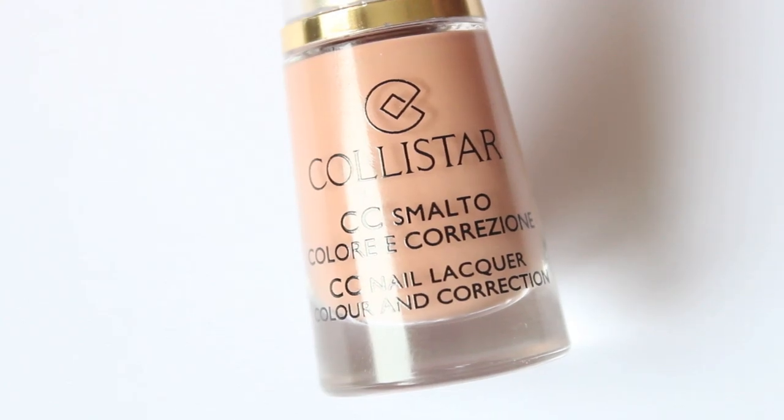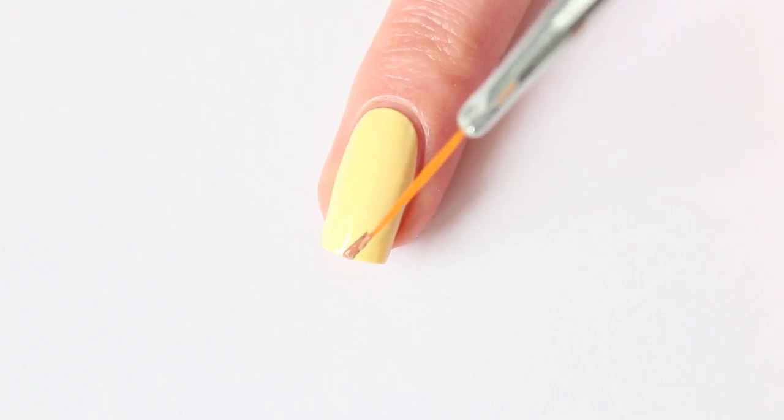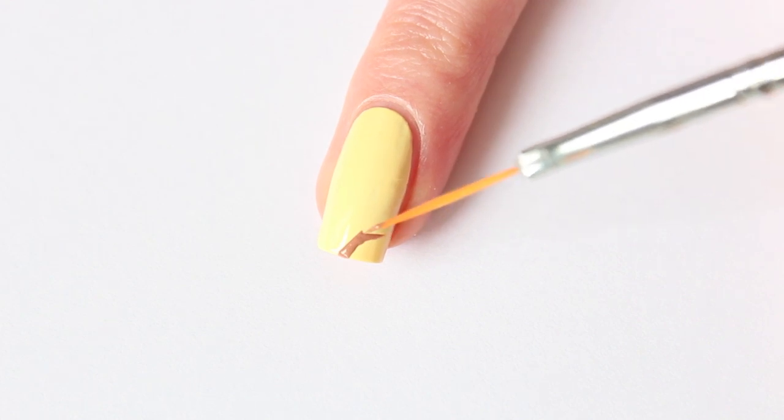Next I'm going to apply Color Star Biscotto for the giraffe print. Apply a drop of nail polish on a piece of paper and dip your nail art brush in.